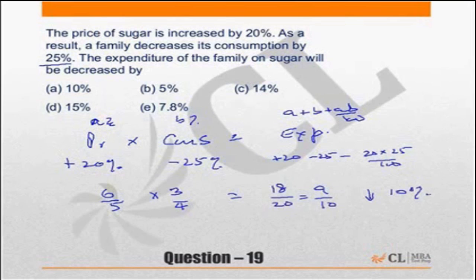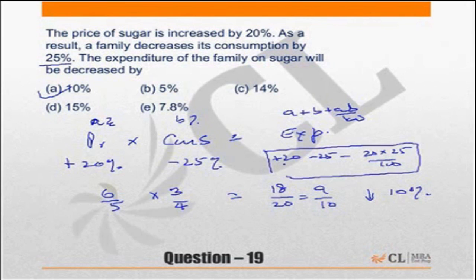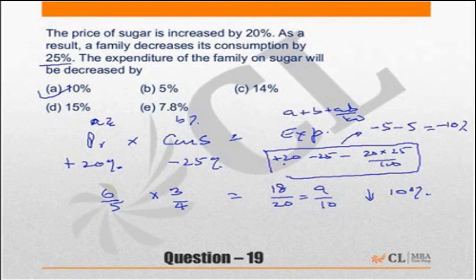Expenditure becomes 9 by 10 times, meaning a decline of 10 percent. So expenditure is reduced by 10 percent. This matches the formula: plus 20 minus 25 is minus 5, and 20 into 25 is 500 by 100 which is 5, so again minus 5, giving minus 10 percent.